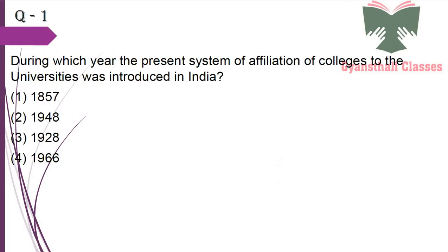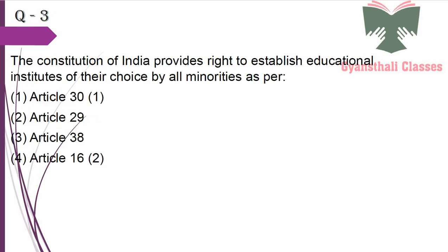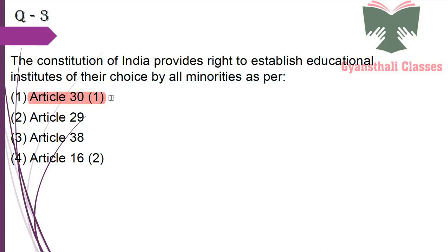First question: During which year was the present system of affiliation of colleges to the universities introduced in India? It was introduced in 1857. Next question: Which one of the following is an educational FM radio network? It is Gyan Vani. Next question: The Constitution of India provides the right to establish educational institutes of their choice by all minorities as per Article 31.